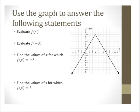Let's get right into some examples. We're given a graph and asked to use it to evaluate the following statements. We see x on the horizontal axis and f(x) on the vertical axis, which tells us that y is a function of x. We're asked to evaluate f(4). In this notation, the input x value is 4. So when my input is 4, what is my output? The output is 5 — f(4) = 5.